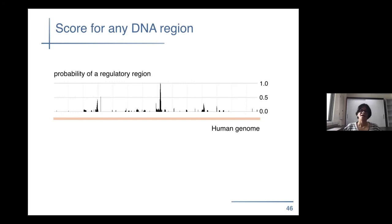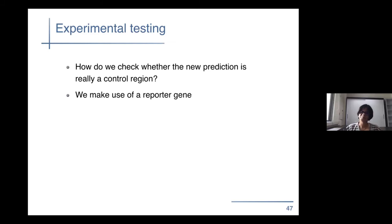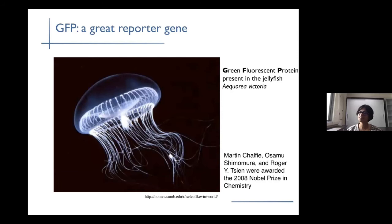One way of validating the predictions is through experimental testing. Biologists have come up with a reporter gene — something like a green fluorescent protein, which is present in jellyfish and fluoresces, especially under UV light. The discovery of this protein won a Nobel Prize. What people do is take this protein sequence, add to it the predicted enhancer region next to it, and then if your enhancer region is really active in the heart, this gene should glow in the heart. So you create this artificial construct of DNA and insert it in a fertilized egg.